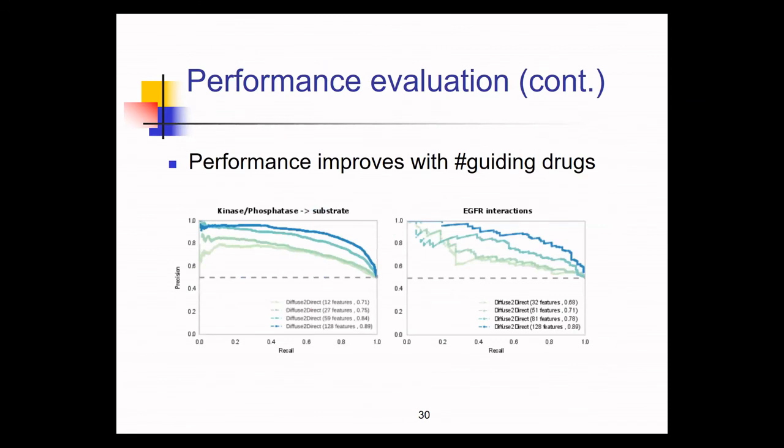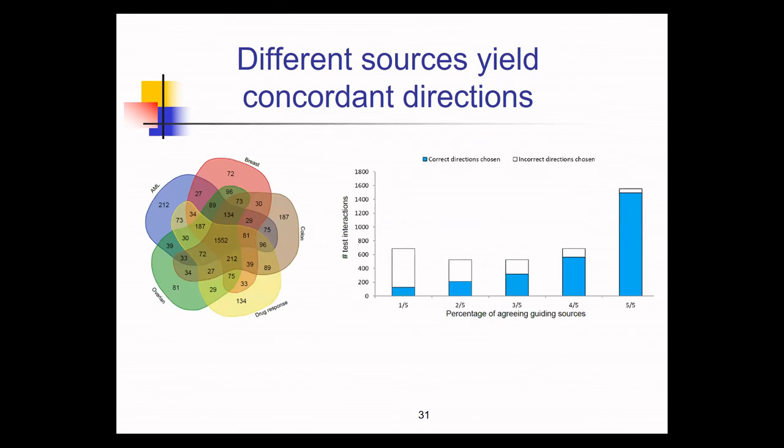Again, one thing to observe is that the more information we feed the method, the better its performance, which again supports our use of drug response data in this case for orienting the network. Now, what about the agreement between the different sources of information? It turns out that the sources produce relatively concordant predictions with the more sources supporting a prediction, the more likely the prediction to be correct. And this allowed us to compute some confidence measure in our predictions.